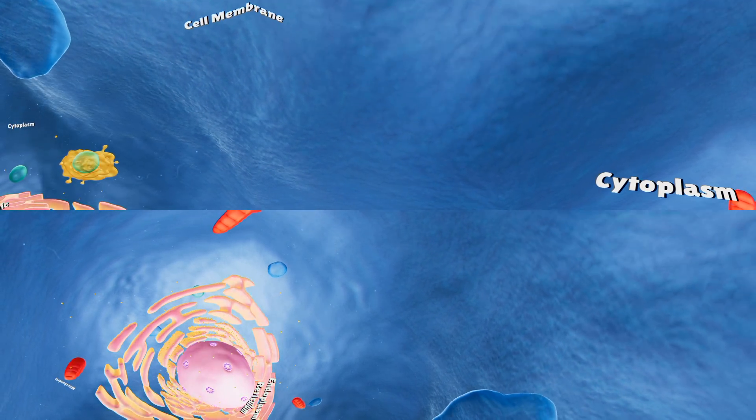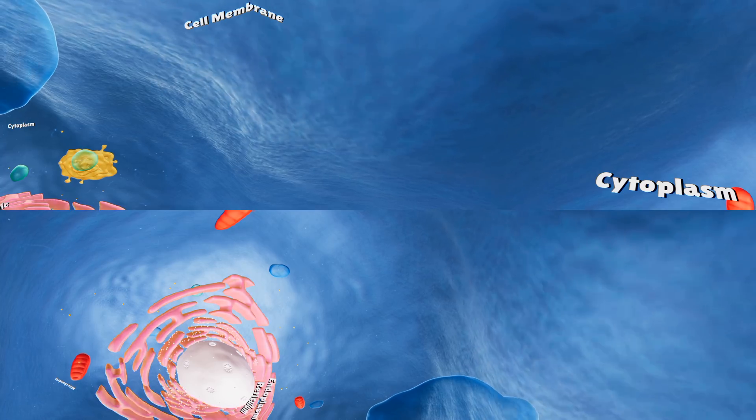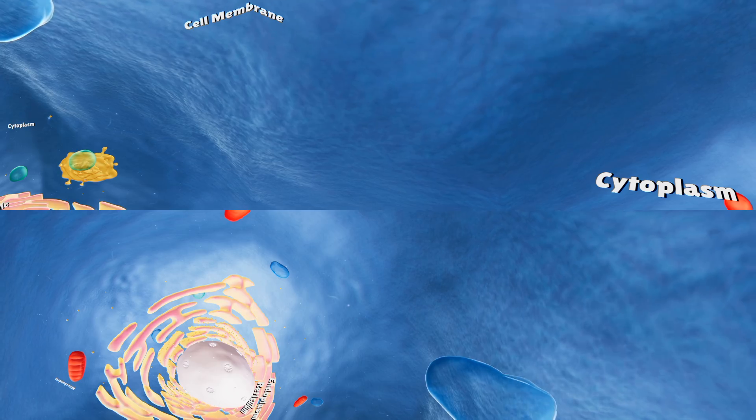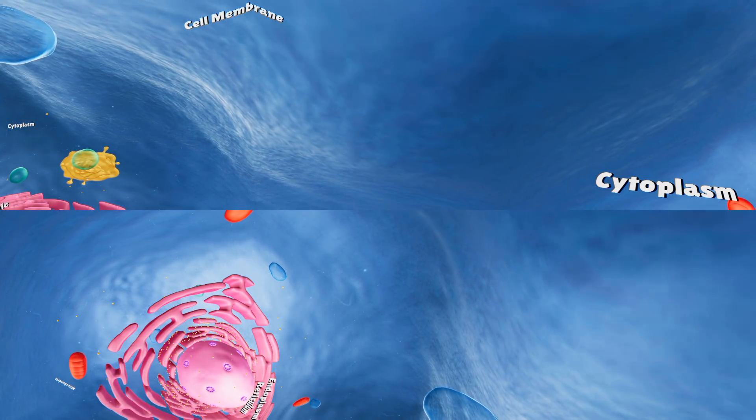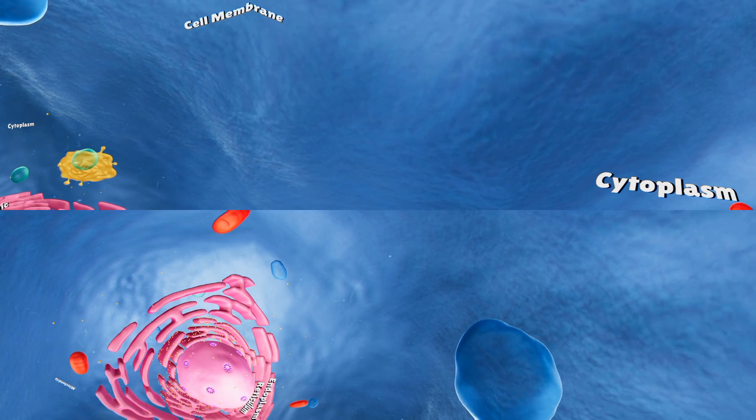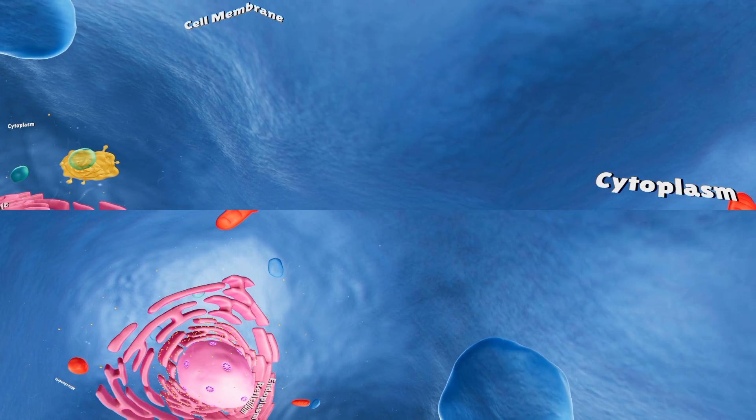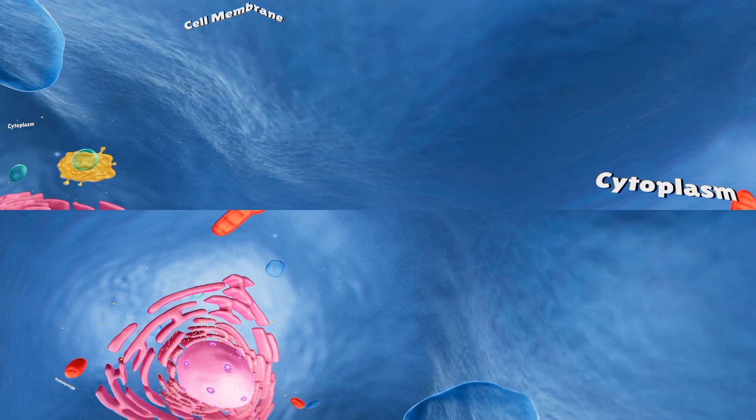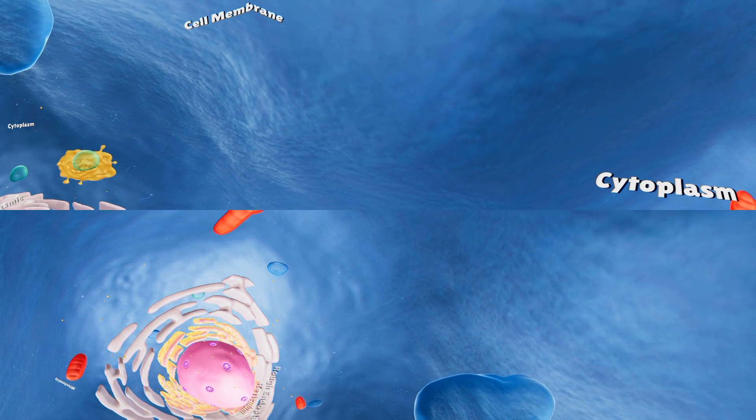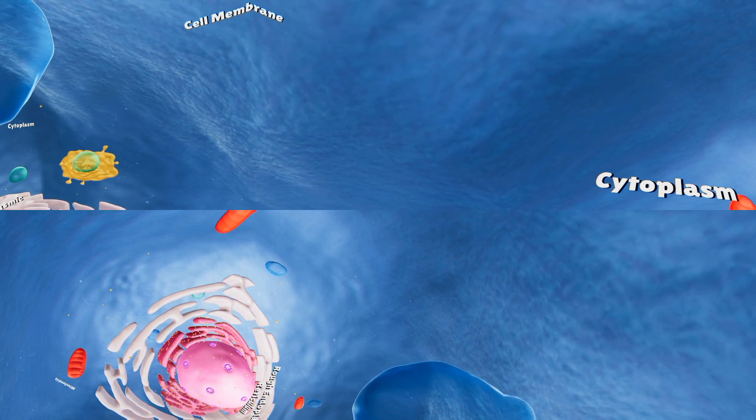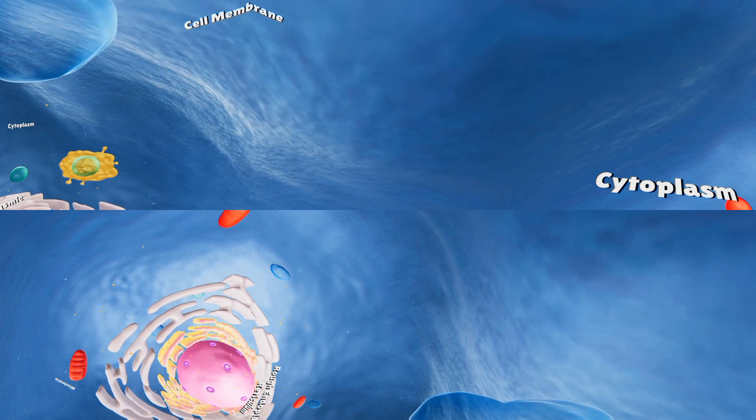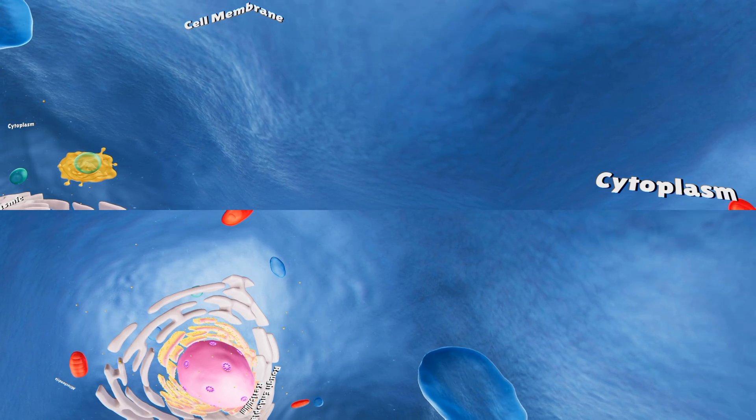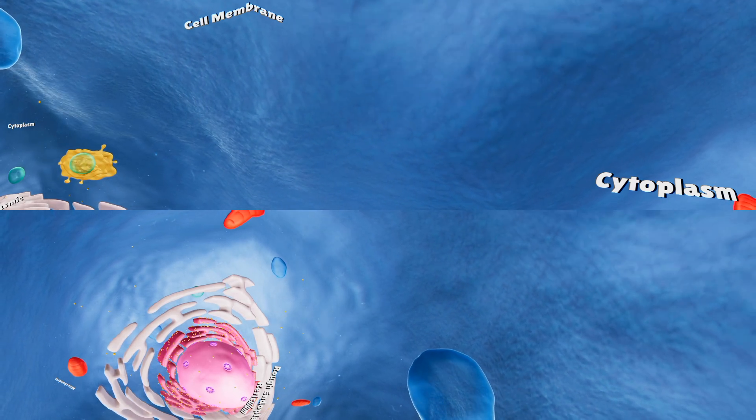The wall-like structure around it is the endoplasmic reticulum. There are two different types of endoplasmic reticulums. The rough endoplasmic reticulum is where there are ribosomes attached. Ribosomes are where the protein is synthesized in the cell. Ribosomes are also found freely in the cytoplasm.